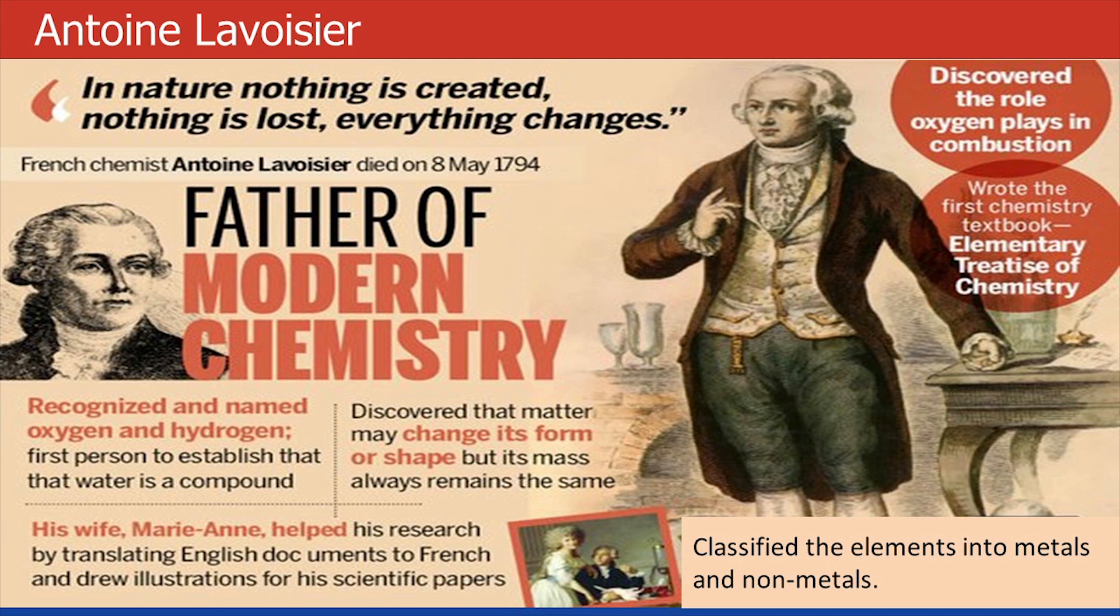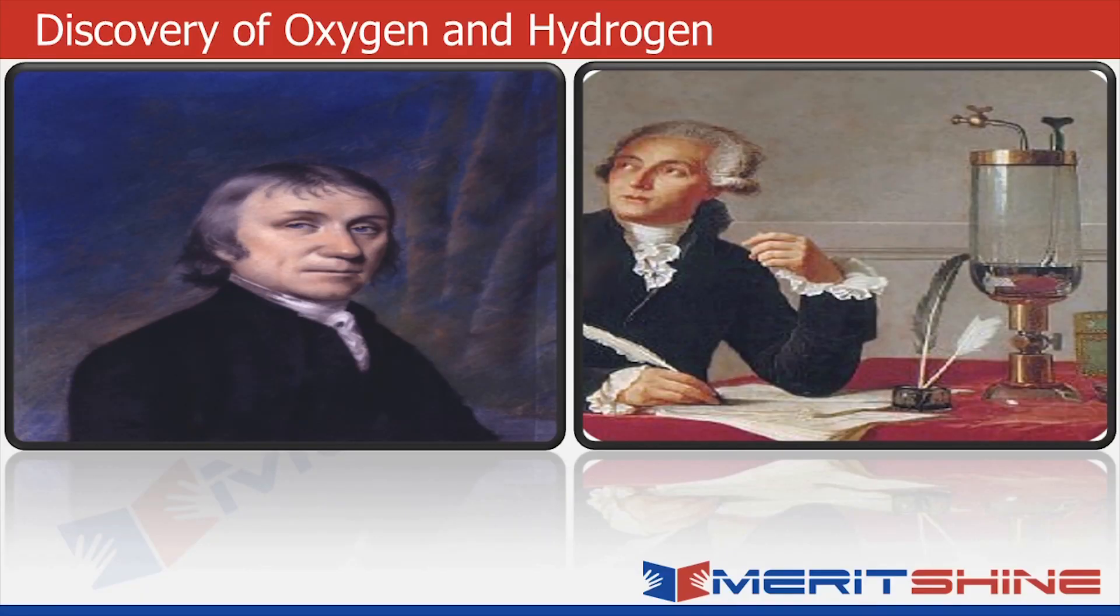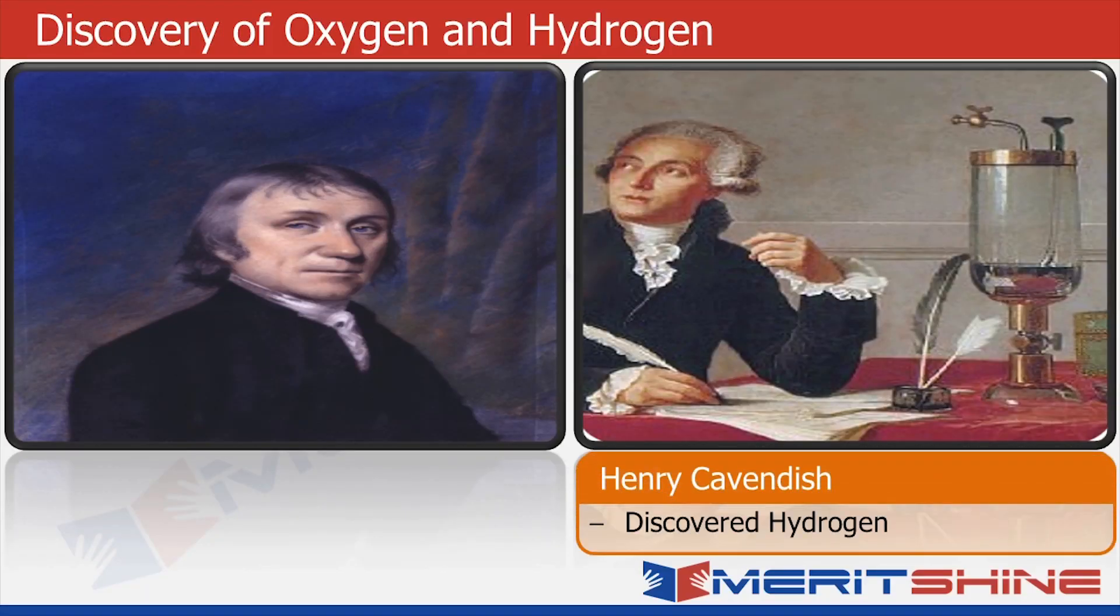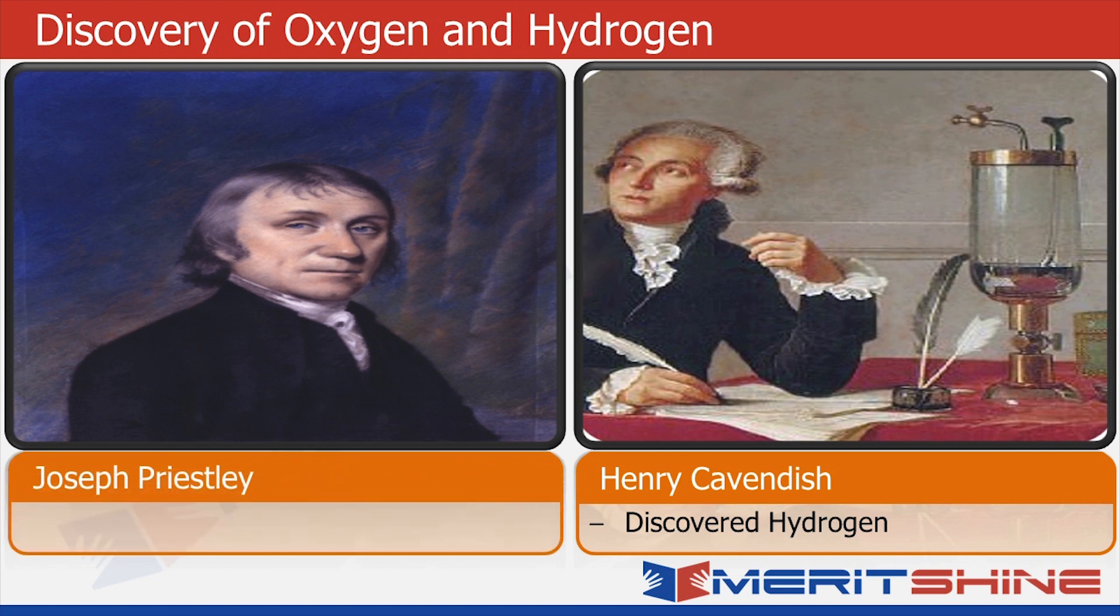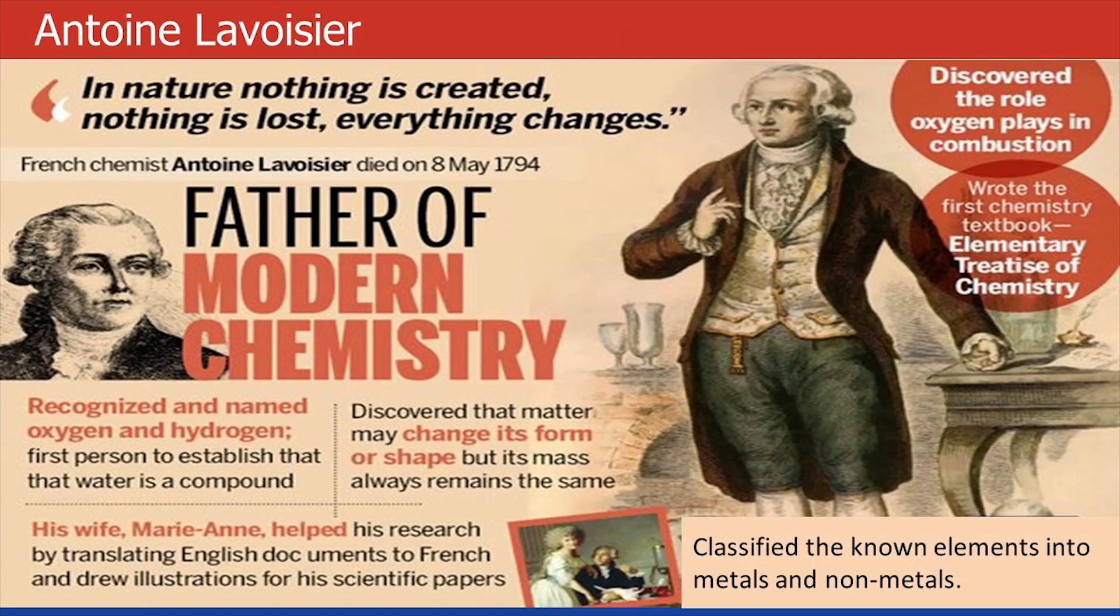In 1778, he named oxygen and in 1783, he named hydrogen. Please note, he did not discover them. Hydrogen was discovered by Henry Cavendish and the credit for the discovery of oxygen goes to Joseph Priestley. Further, he is credited with putting together the first extensive list of elements which he classified as metals and non-metals.